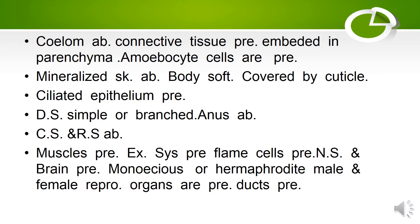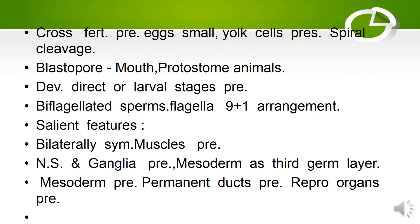Nervous system and brain are primitive. These are monoecious and hermaphrodite — male and female reproductive organs are present in the same individual. Ducts are present in reproductive organs. Cross fertilization is the rule. Eggs are small; yolk cells are present. Cleavage is spiral. Blastopore forms the mouth — these are protostome animals. Development is direct; larval stages are present.